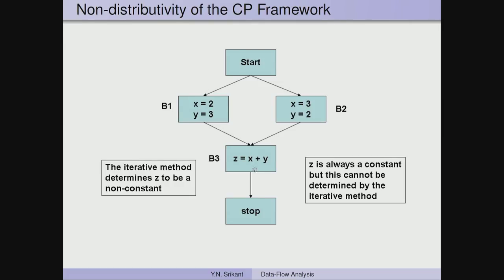If we had used the MOP solution, we would take each path separately. On path 1: x = 2, y = 3, z = 5; on path 2: x = 3, y = 2, z = 5. Taking the meet of z = 5 and z = 5 gives 5. But the iterative solution gives NAC for z. This is the problem with the constant propagation framework — it is not distributive, so the iterative algorithm will not catch all constants available in the program.